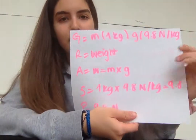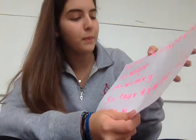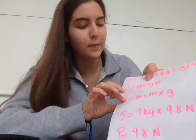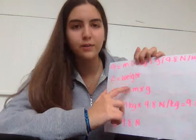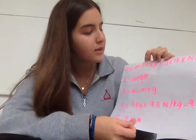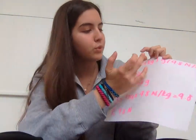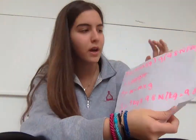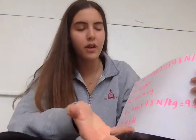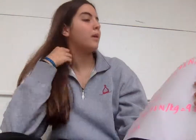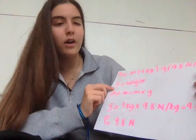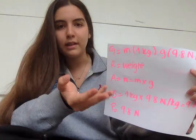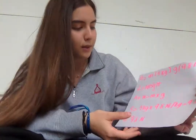For this problem, I used the method of GRASP, and I was trying to find a weight. Given is mass, which is 1 kilogram, and gravity, which is on Earth, which is 9.8 Newtons per kilogram. And my Required is weight, because I need to find a weight.